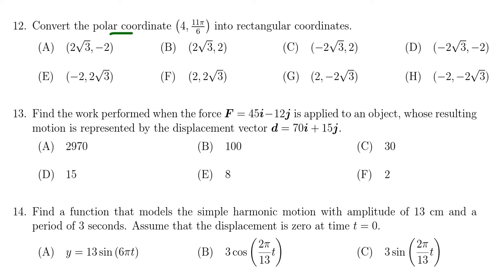So if we're in polar coordinates here, this means that our radius is 4 and our angle is 11π over 6.